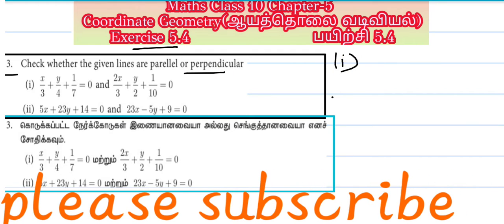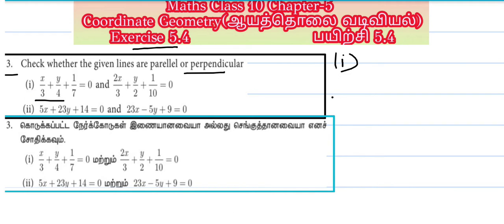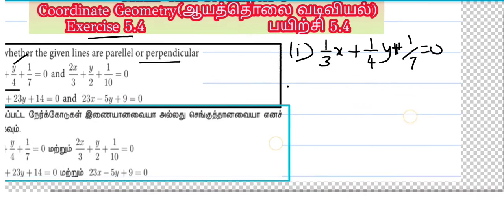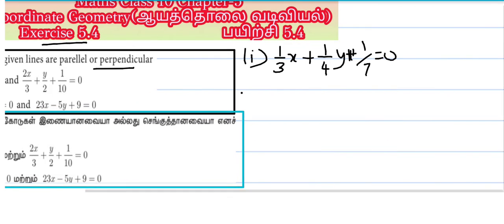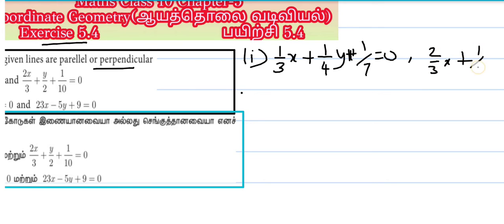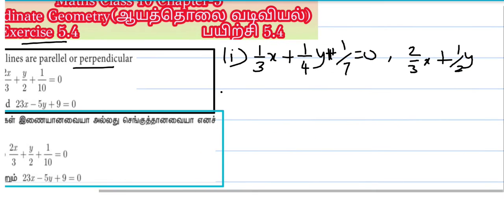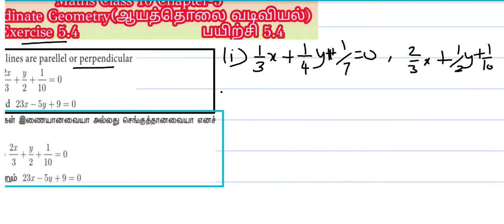Sub-question 1: we are given the equation. I will modify it. That gives us x/3, which is (1/3)x, then y/4, which is plus (1/4)y, plus 1/7 equals 0. And equation 2 is 2x/3, equal to (2/3)x plus y/2, equal to 0.